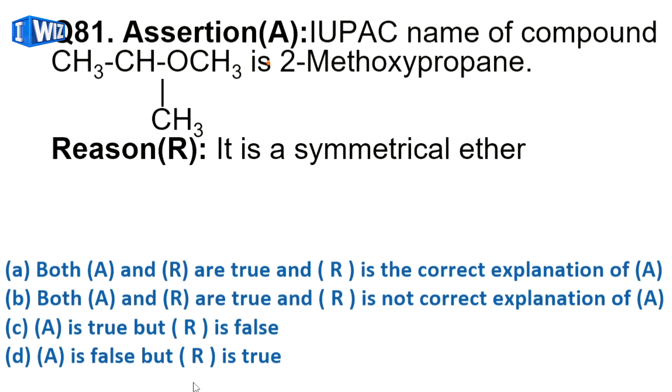Next is assertion-reason type question. The assertion is: IUPAC name of compound CH3-CH-OCH3 with CH3 is 2-methoxypropane. If you do the naming, this will become 2-methoxypropane. This is correct. It says it is symmetrical ether - no, it is unsymmetrical ether. So assertion is correct and reason is not correct, C is the correct answer.